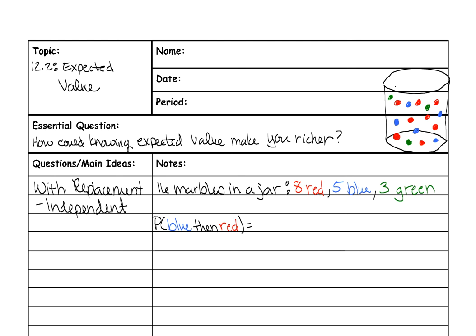I've made this jar to visually simulate what happens. Please don't draw this on your own paper because I'm going to be erasing and putting things back easily since I'm doing it digitally. So the first thing we're going to do is pull a blue marble out of the jar — there are five blue marbles out of a total of 16 — then record it and put it back in.